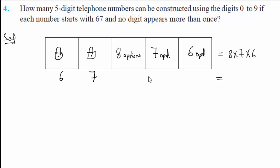So you multiply: 8 × 7 × 6 = 336. You can make 336 such types of numbers. This is your final answer, using the fundamental principle of counting to solve such types of questions.